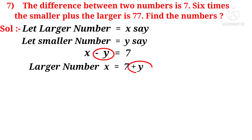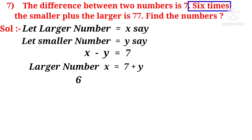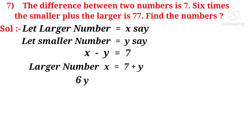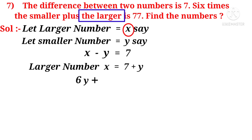Because minus Y when transposed to the right hand side, it becomes plus Y. Now, 6 times — it indicates 6 into the smaller number, which is Y. So, 6Y. Observe the word 'plus' — it indicates the plus symbol. The larger number is X. So, 6Y plus X equals 77.